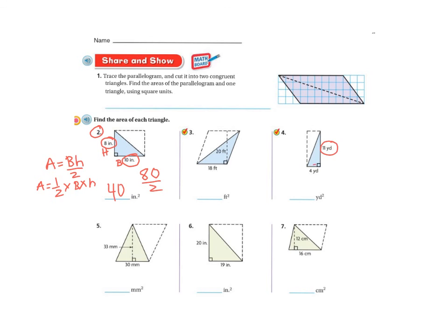You're going to do the same, so base times height, and then you're going to divide that by two. Base times height, and divide it by two. Base times height, and divide it by two. I'm going to do the rest on your own or with a partner, and I'm always there for you on the carpet if you need me. Good luck.